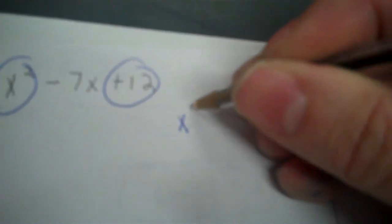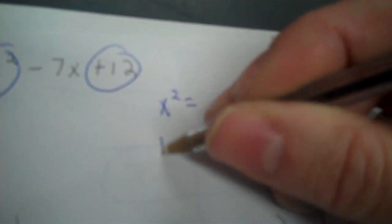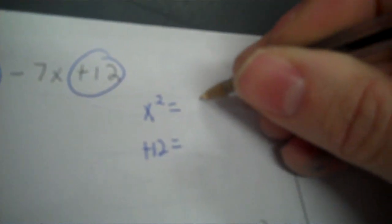Next problem. X to the second power minus 7x plus 12. So we got x to the 2 power and 12. So x to the 2 and positive 12, that's always x times x. Make a table, put your positive 12, and that's a match.